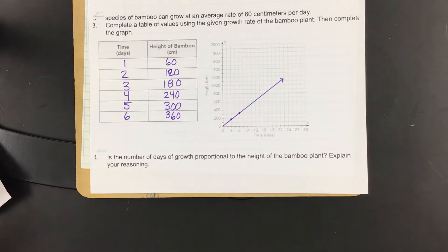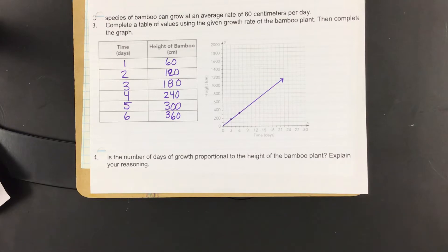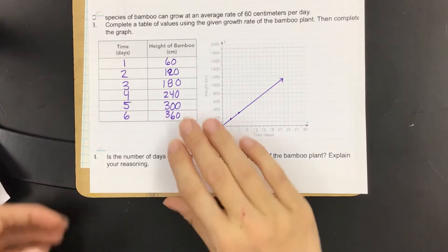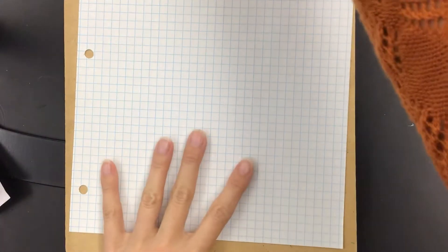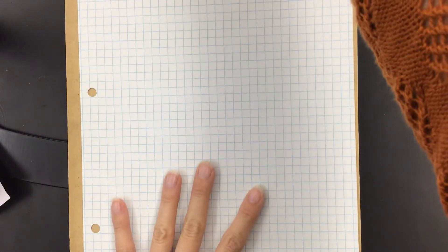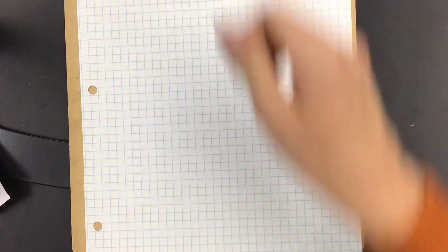So today what we're going to do is find the constant of proportionality if we're given a graph. You need a piece of graph paper today. If you don't have one, grab one from the basket on the side counter.